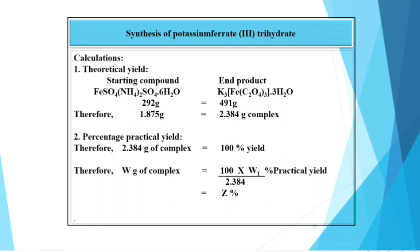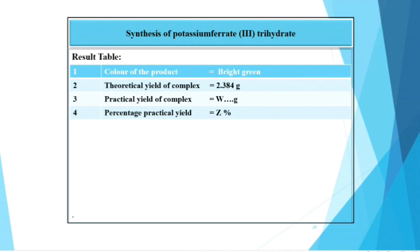To calculate percentage practical yield, 2.384 g of complex corresponds to 100% yield. Therefore, W gram of complex equals 100 times W divided by 2.384 which equals Z percent of the complex. Result table: Color of the product - Bright green, Theoretical yield of complex - 2.384 g, Practical yield of complex - W gram, Percentage practical yield - Z percent.